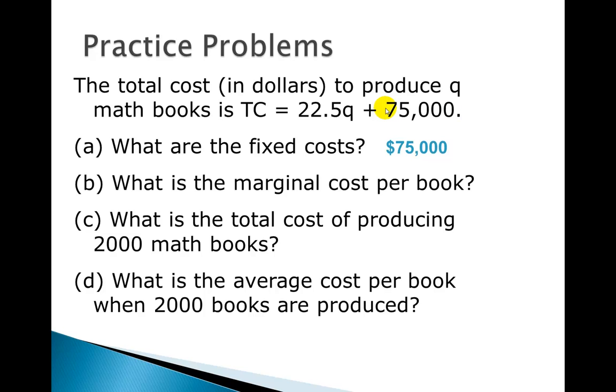What's the marginal cost per book? And so when we're looking at this graph, this is a linear situation. The slope of a line is the marginal cost. So we're looking at $22.50 per book, so that would be the marginal cost there.